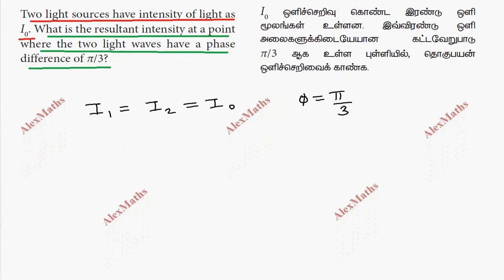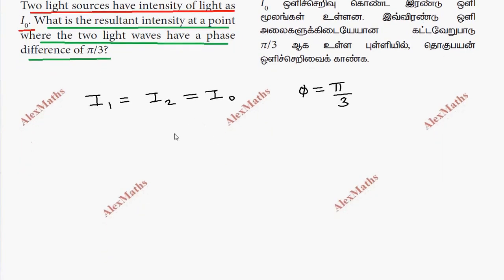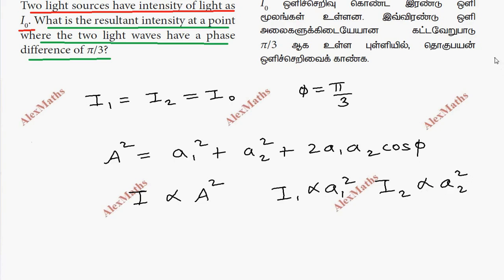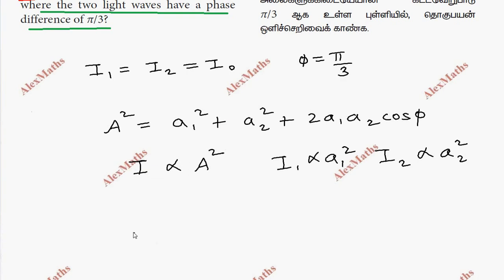We have a previous derivation as a basis that we need to understand. The resultant amplitude is the square root of A₁² plus A₂² plus 2·A₁·A₂·cos(φ). Since intensity I is proportional to amplitude squared, I₁ is proportional to A₁² and I₂ is proportional to A₂².